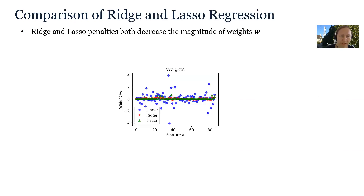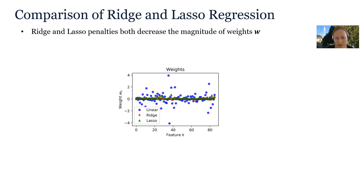Now let's compare ridge and LASSO regression. Both ridge and LASSO penalties decrease the magnitude of the weights, and we can see that in this plot. The blue circles show the weights of the non-penalized multivariate linear regression model, while the red stars and green triangles show the coefficients of ridge and LASSO regression models respectively. Clearly the weights of the non-penalized model are much higher in magnitude.